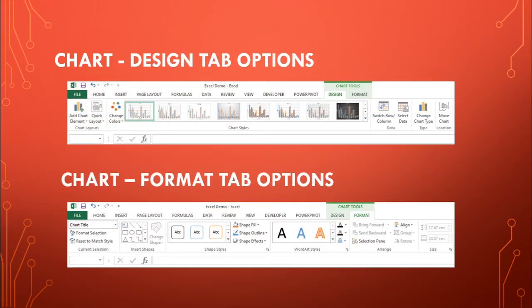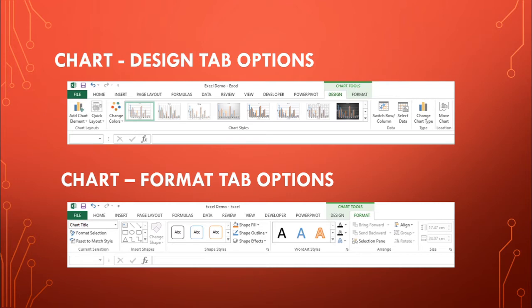Under the Design tab, there are a number of options. You can make use of different chart styles, change chart colors, switch rows and columns, change the chart type, and move a chart to another sheet. Using the Format tab, you can insert Word Art, change the color of chart items, and make other changes to the chart.